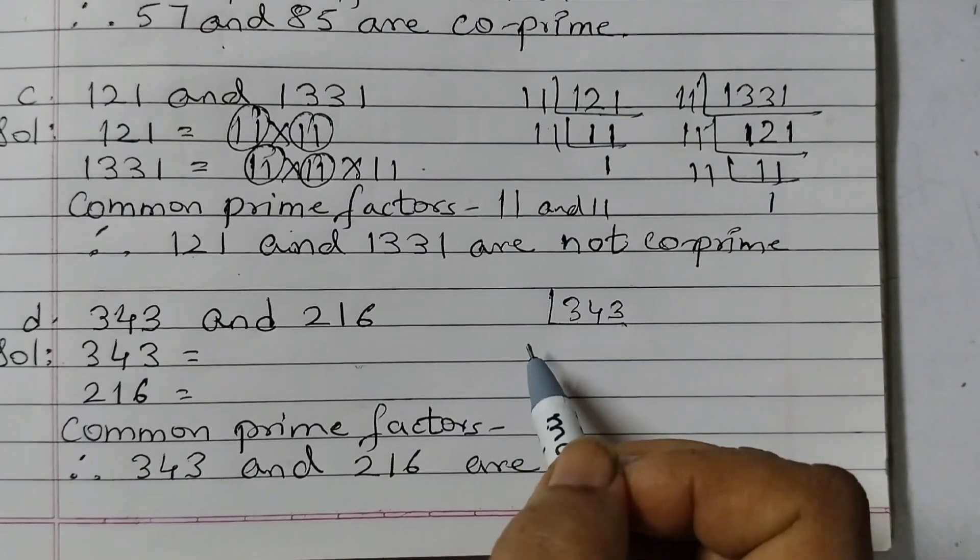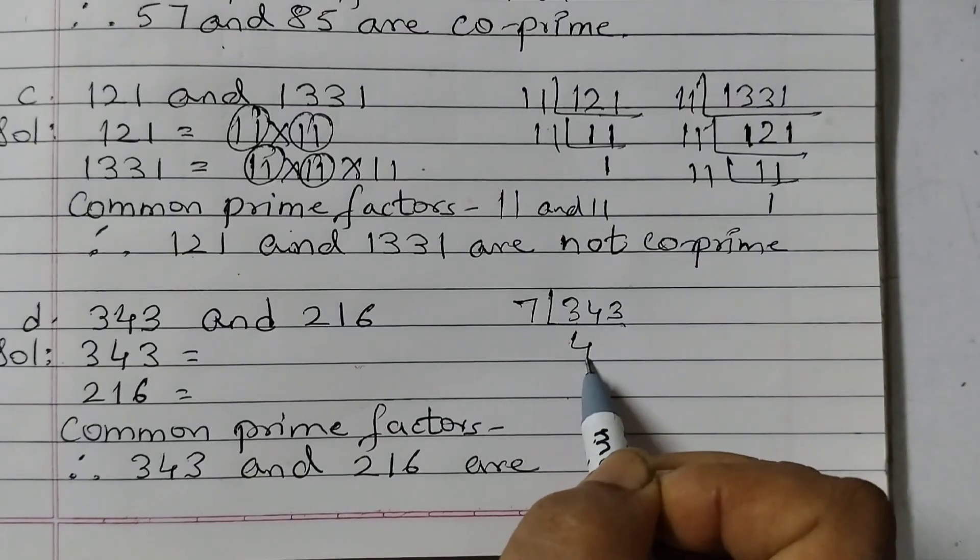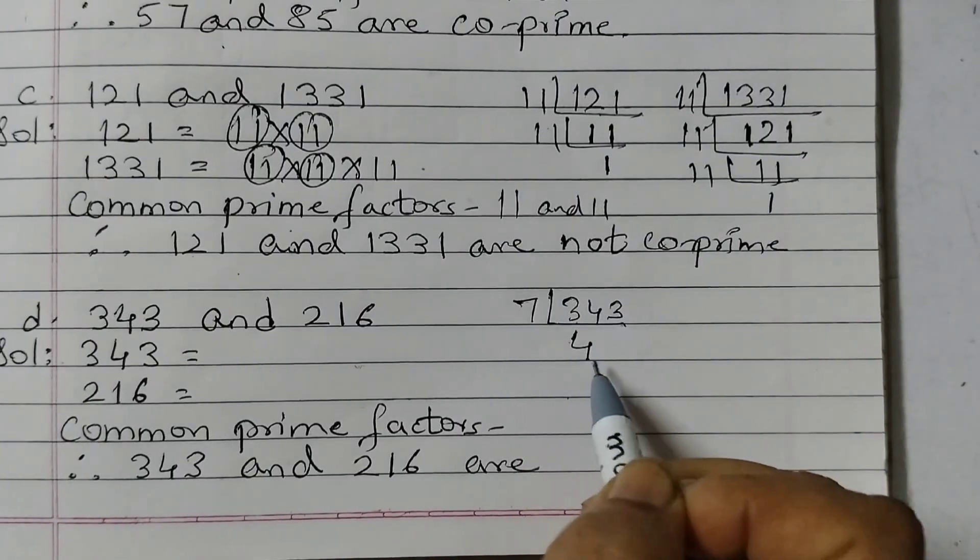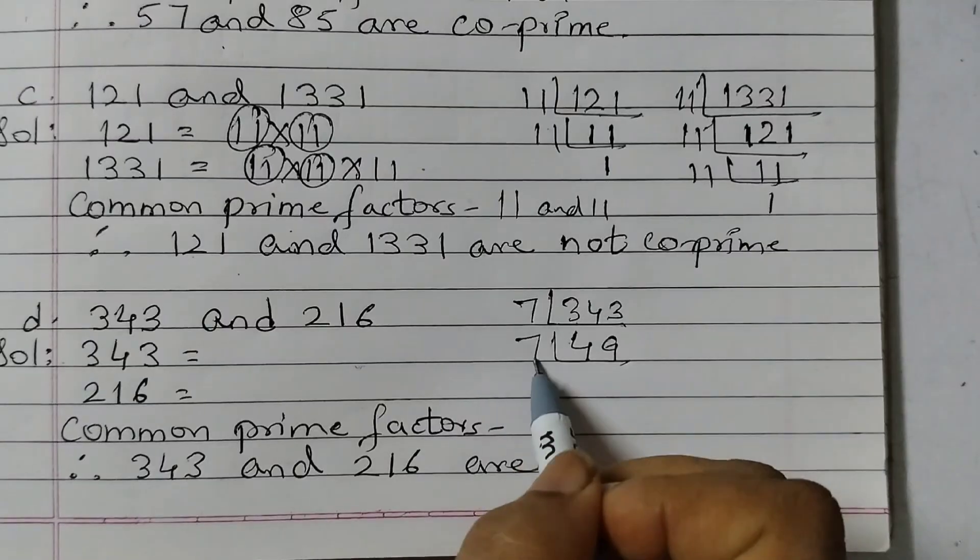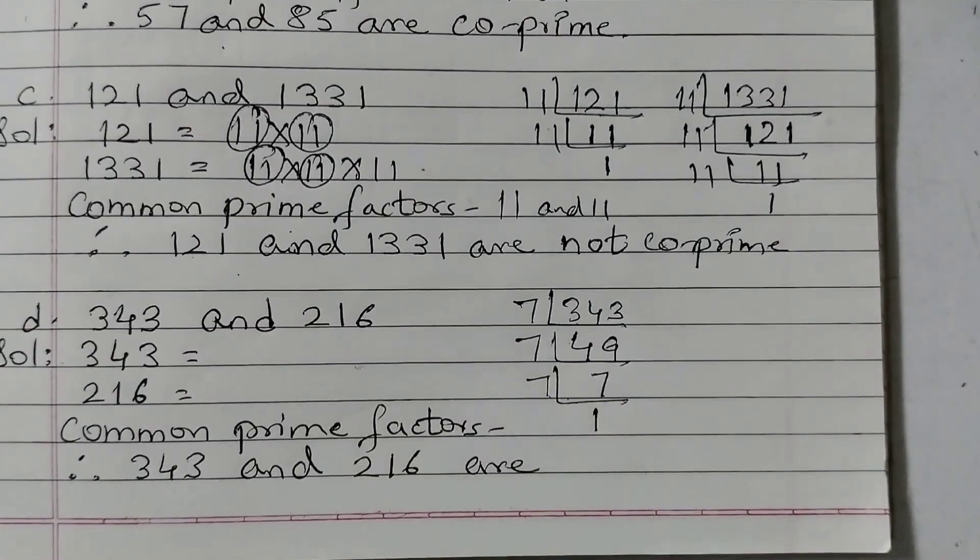343. This goes by 7. So 7, those are 28, 63, 7 nines is 63. 7 into 7, 49. So then it is 7 into 7 into 7.